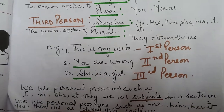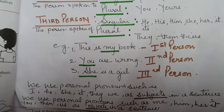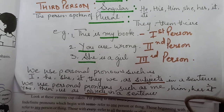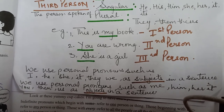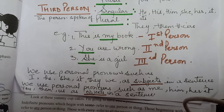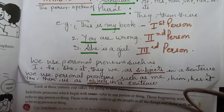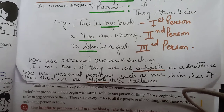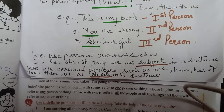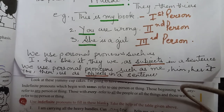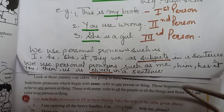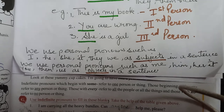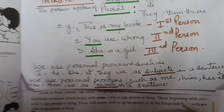For examples: 'This is my book' — first person. 'You are wrong' — second person. 'She is a girl' — third person. We use personal pronouns such as I, he, she, it, they, we as subjects in a sentence. We use personal pronouns such as me, him, her, it, you, them, us as objects in a sentence.